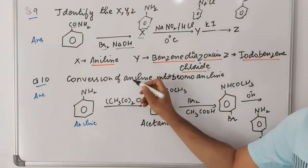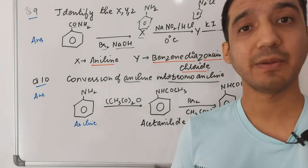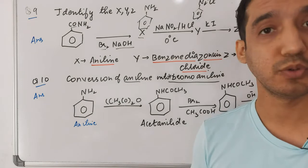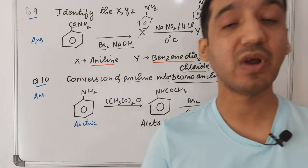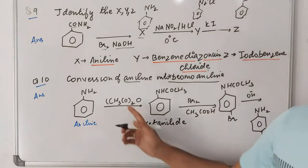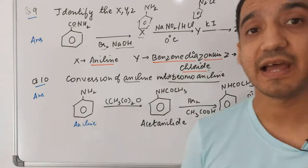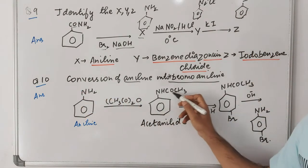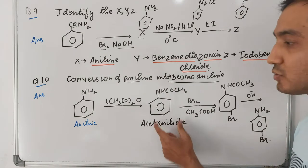Question ten: convert aniline to 4-bromoaniline. When aniline is reacted with bromine directly, bromine attaches at ortho and para positions. Since we want bromine only at the para (4) position, we first react aniline with acid anhydride (acetic anhydride).